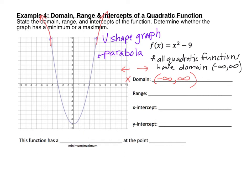For the range, it's not going to be negative infinity to positive infinity, because the arrows only point in one direction vertically. For my lowest value, it doesn't go down forever — the lowest it ever touches here is negative 9. Since it touches there, we use a bracket, and then the highest value goes up forever, so that's positive infinity with a parenthesis. Now for our intercepts, we just look at where it crosses the axes. For the x-intercept, there are two of them: one at (negative 3, 0) and another at (3, 0). For the y-intercept, it only crosses the y-axis at one point: (0, negative 9).